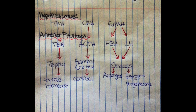Next, there is corticotropin-releasing hormone. This hormone stimulates the release of adrenocorticotropin hormone, which then travels to the adrenal cortex, which stimulates the release of cortisol. Cortisol's functions include vasoconstriction and suppressing the immune system.